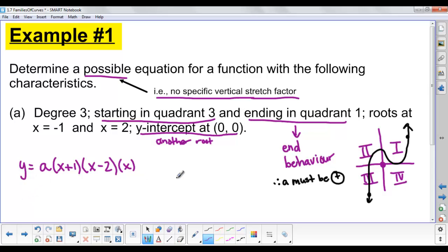This is our general polynomial function. Now the question says determine a possible equation, so pick a value for a. As long as it's positive, you can pick any value. I could say y equals 100x(x+1)(x-2). I could put in 30, I could put in a million if I wanted to. Any number, as long as it's positive, will be acceptable.